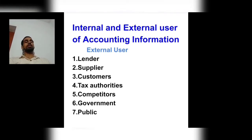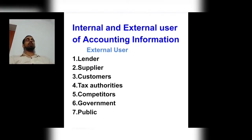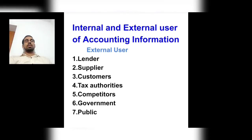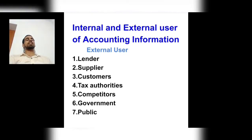The third external user is the customer. Customers have interest in accounting information because regarding the products or goods they are purchasing, they have a right to know all about those goods. The fourth external user is tax authorities. When we record all transactions and finalize the balance, tax is calculated. Tax authorities — the income tax department, sales tax department — all these departments need accounting information to verify that no errors or fraud have been committed.